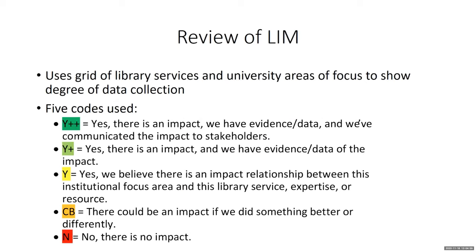For those with previous knowledge of library impact maps, this is a brief review; for those who haven't heard of them, this is a brief introduction. The library impact map uses a grid system where library services are headers for columns and university areas of focus are headers for rows. The intersection between each library service and university area of focus is populated with one of five codes indicating whether data is collected and the degree to which it is collected, used, and shared with stakeholders.